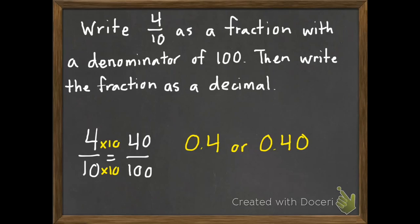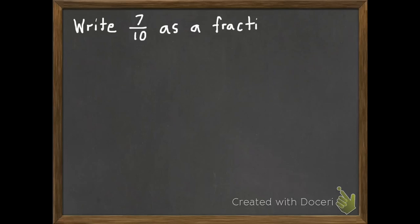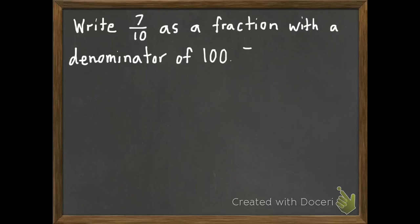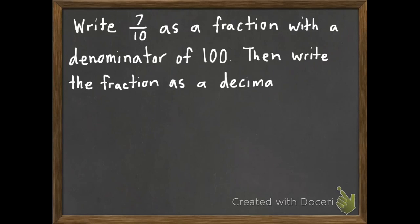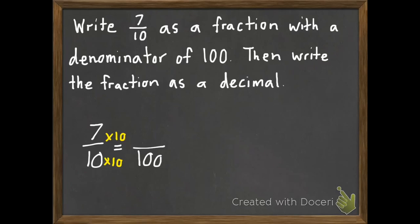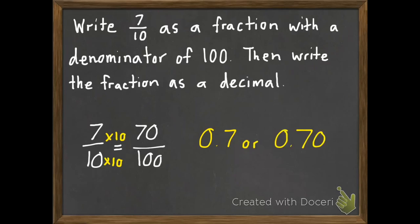We're going to have you try this one along with me. Write seven tenths as a fraction with a denominator of one hundred, then write the fraction as a decimal. So our fraction we start with is seven tenths. We want to change that to a fraction with a denominator of one hundred. We'll multiply by ten. Seven times ten equals seventy. And they want you to write this as a decimal — there are two possible answers. I usually just write them both: seven tenths or seventy hundredths.